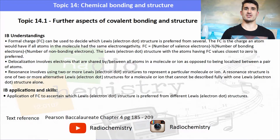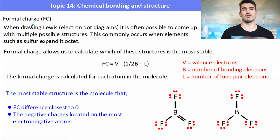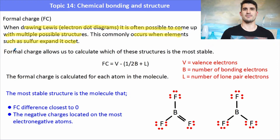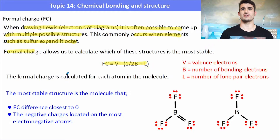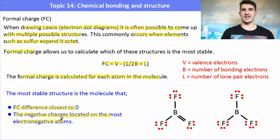The skill is to determine which is the most stable or likely configuration from a Lewis diagram using formal charge. When we have a Lewis diagram, sometimes we might have more than one way to draw it, especially when we have elements that expand their octet. The formal charge formula is equal to the valence electrons take away a half times the bonding electrons plus the number of lone electrons. The formal charge is calculated on each atom in a molecule. When we determine something to be the most stable, we're looking for the formal charge to be closest to zero, or to have a negative charge on the more electronegative atoms.